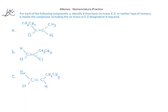For each of the compounds, we're asked to identify if they have cis-trans, E/Z, or neither type of geometric isomer. Once we've identified that, we're then asked to name each of the three compounds. Let's begin with the first molecule. We should identify the longest continuous chain that contains the carbon-carbon double bond. We have one, two, three, four, five carbons in this longest chain, and we identify that the carbon-carbon double bond begins on the second carbon. So the base name for this molecule is 2-pentene. We also identify that we have a chlorine substituent on the third carbon, so that substituent would be 3-chloro.